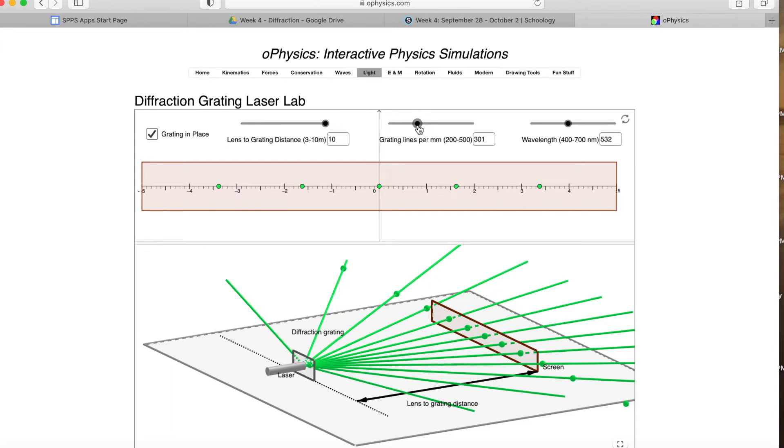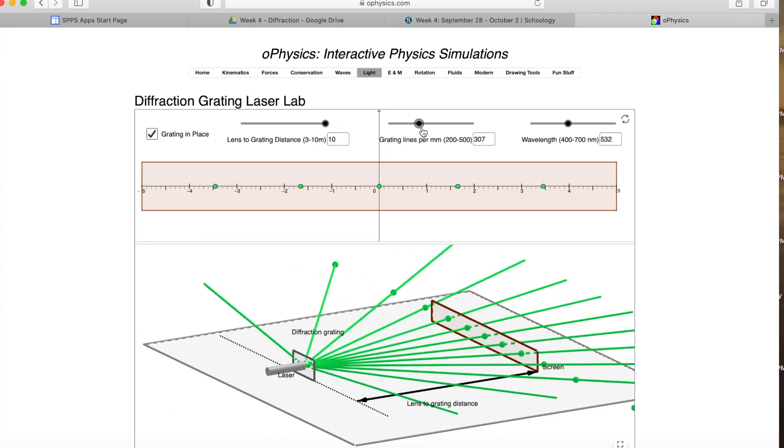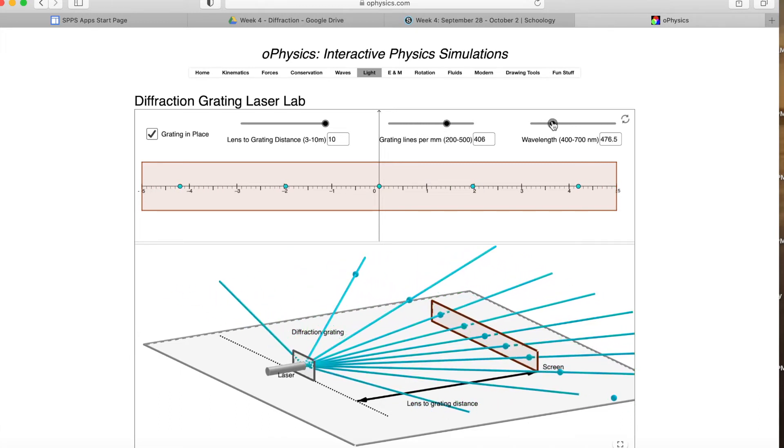Then you can also change the number of slits per millimeter, and you can slide that there to see how it changes.